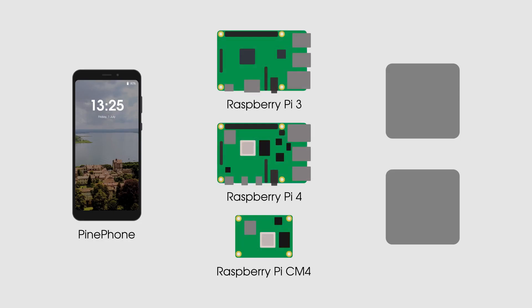So on to some of the key highlights of this new alpha version of LiveG OS that we are releasing today. First up, we are releasing LiveG OS to three new platforms: the PinePhone, the Raspberry Pi, and ARM64 computers, alongside our current support for x86-64.